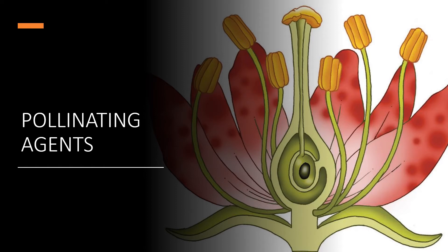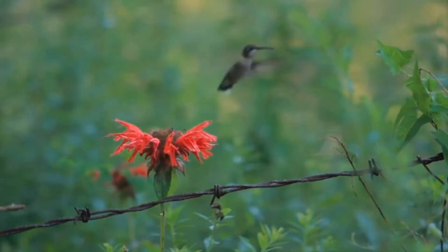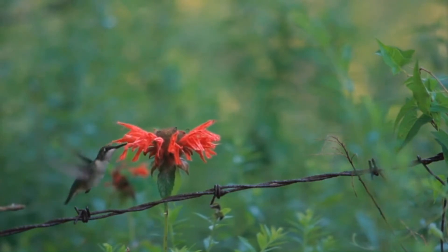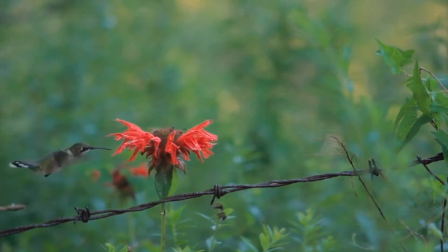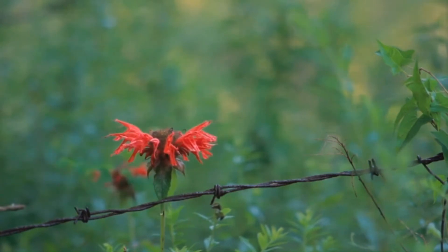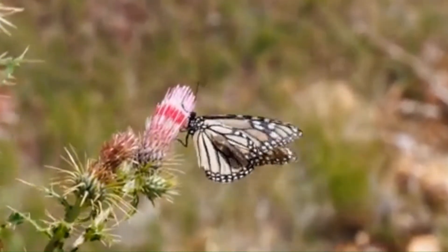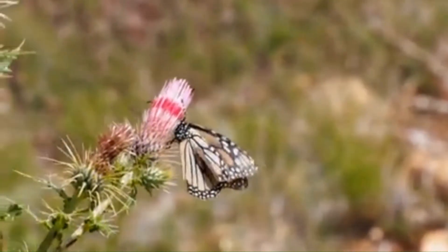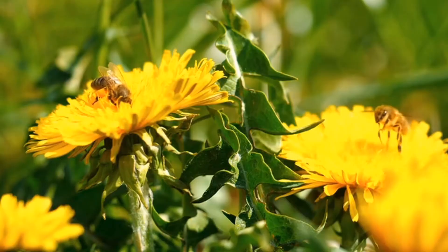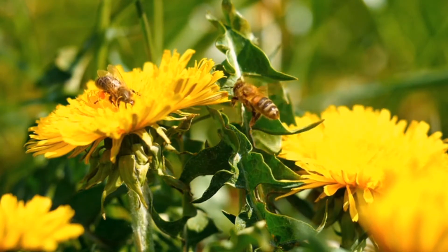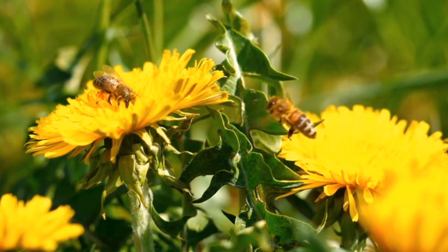For pollination to take place, it needs a pollinating agent. Transfer of pollen grains can be done by insects or animals — like birds here. The pollen grains usually stick on the beak or body of the animal. Here we have a butterfly. When the insect lands on the flower to suck the nectar, pollen grains will stick to its furry feet and body. Here we have bees.